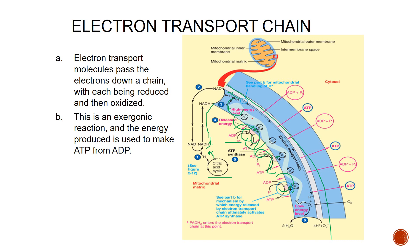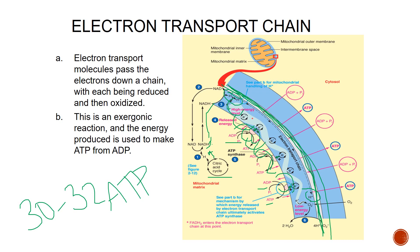The continuous supply of hydrogen ions is due to proton pumps that pump hydrogen from the matrix into the space between the inner and outer membrane. The movement of hydrogen across the membrane provides enough energy for the enzyme ATP synthase to convert ADP to ATP. One glucose molecule will ultimately yield anywhere from 30 to 32 ATP because of that proton being shifted.